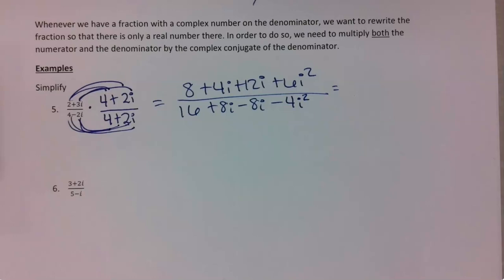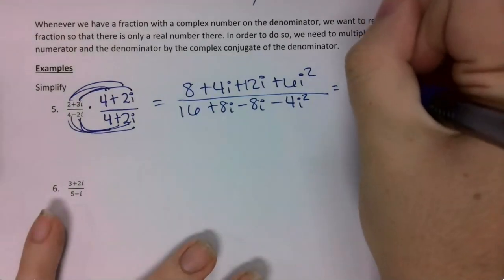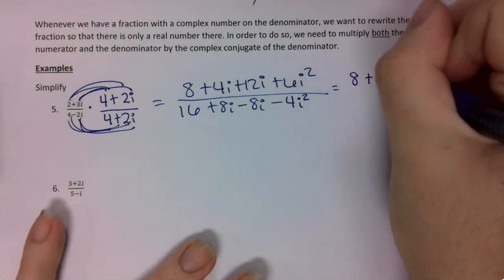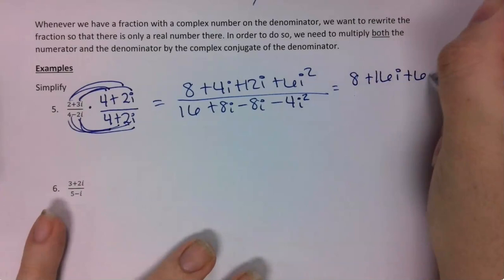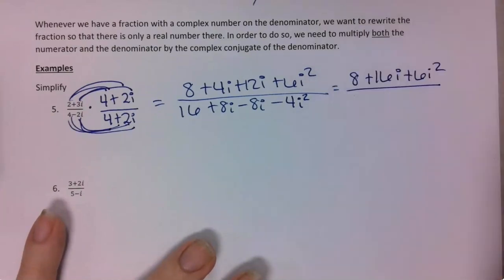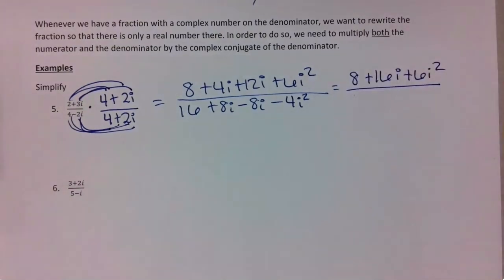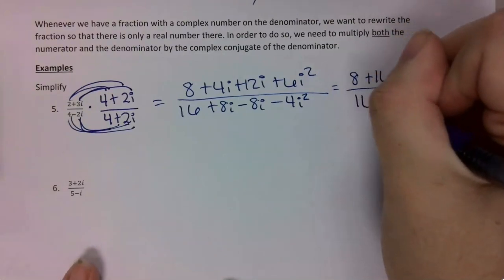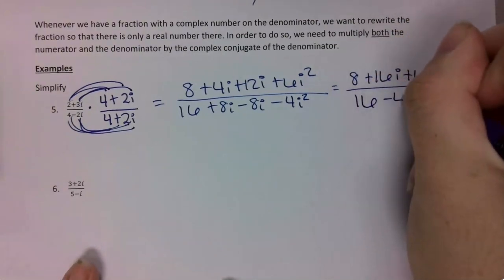Then I want to combine my terms in the middle. So in the numerator I'm going to have 8 plus 16i plus 6i squared. On the denominator I'm going to just get 16 minus 4i squared.